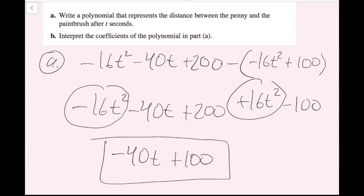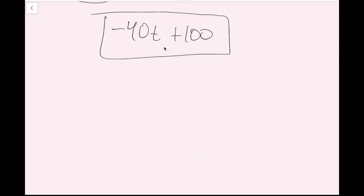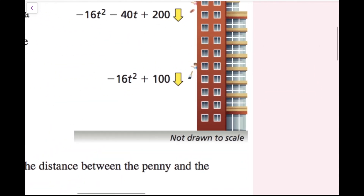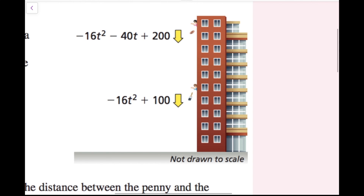For part B, interpreting the coefficients: if t equals zero, the polynomial gives 100, representing the starting distance between the penny and paintbrush before they are dropped. This makes sense because the penny starts at 200 feet and the paintbrush at 100 feet, giving a difference of 100 feet.